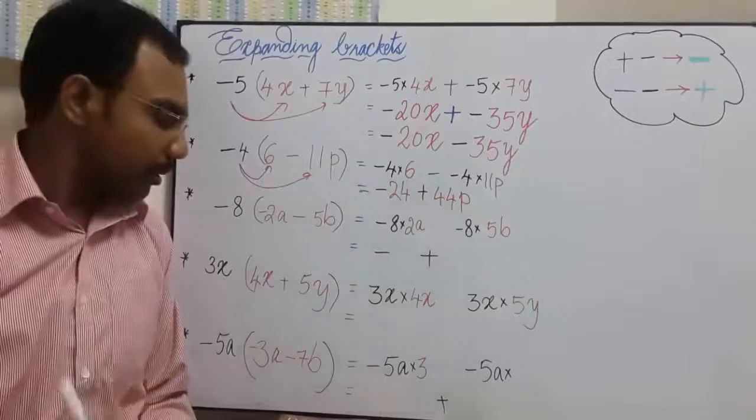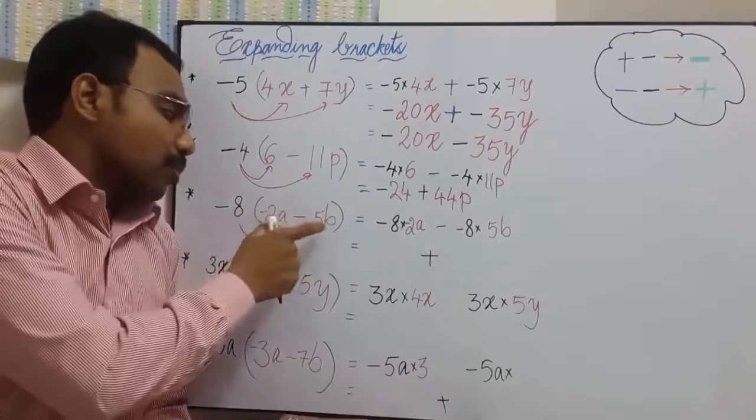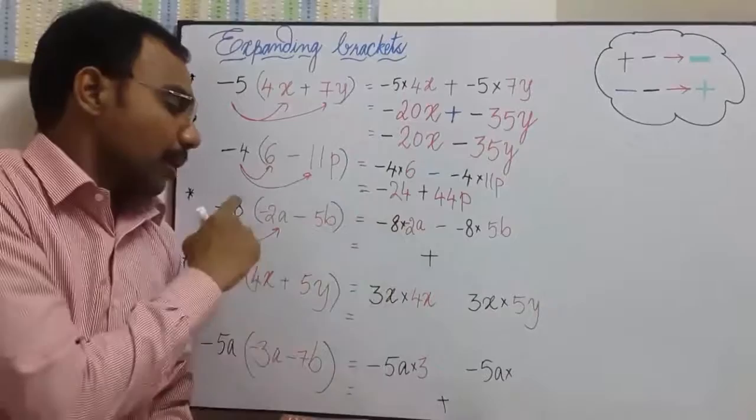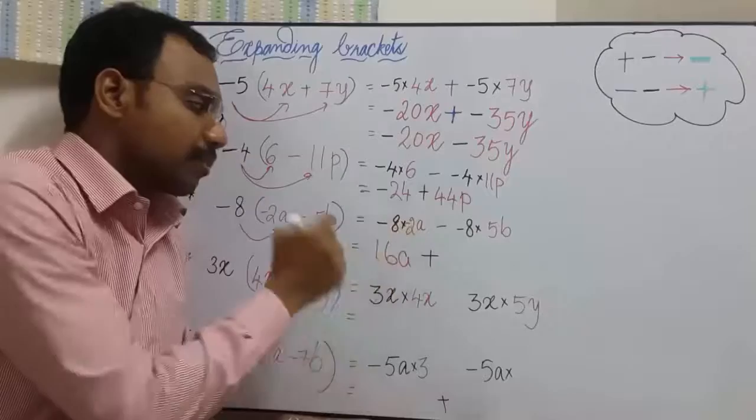Now let us look into one more example. Negative 8 times negative 2a minus 5b. So here negative 8 is guest and minus 2a minus 5b is the family. So negative 8 wishes negative 2a and negative 8 also wishes 5b. So you will get positive 16a because negative into negative is positive.